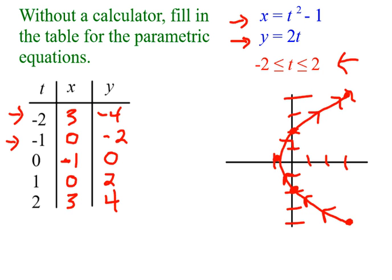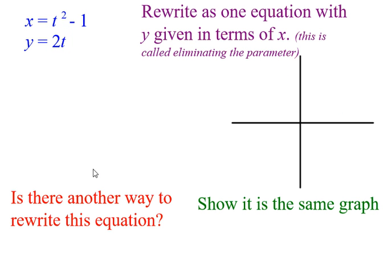We can also find different parts or we can eliminate our parameter if we want. So rewrite as one equation. So there's a couple options. One was if we want to write it as a y equals, we could say that I'm going to solve my x equals equation for t.